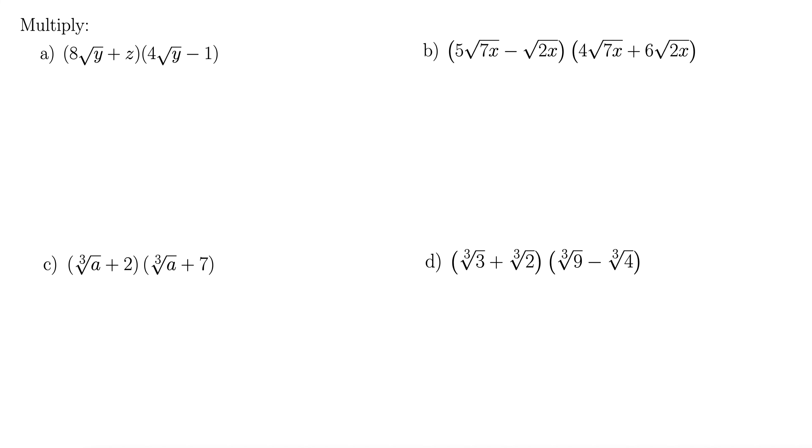For this batch of exercises, we want to use FOIL on radical expressions. So let's start with A here. We have 8 rad y plus z, all of that times the quantity 4 rad y minus 1.